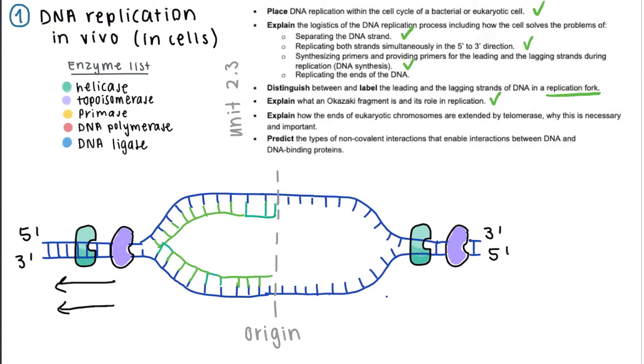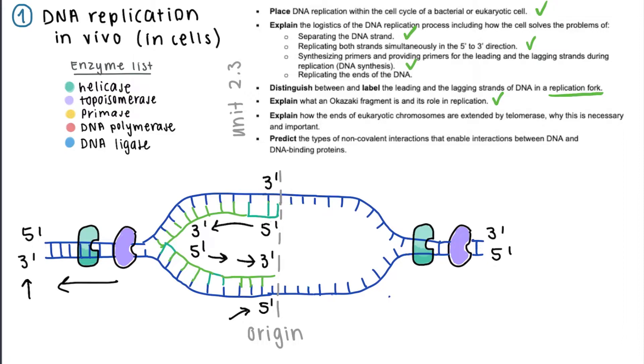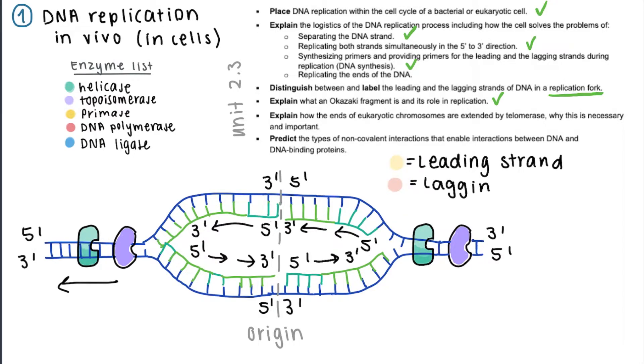We already determined which is the leading strand and which is the lagging strand for the replication fork on the left, but on the right it's going to be different because of the directionality of the end of the DNA on the right.